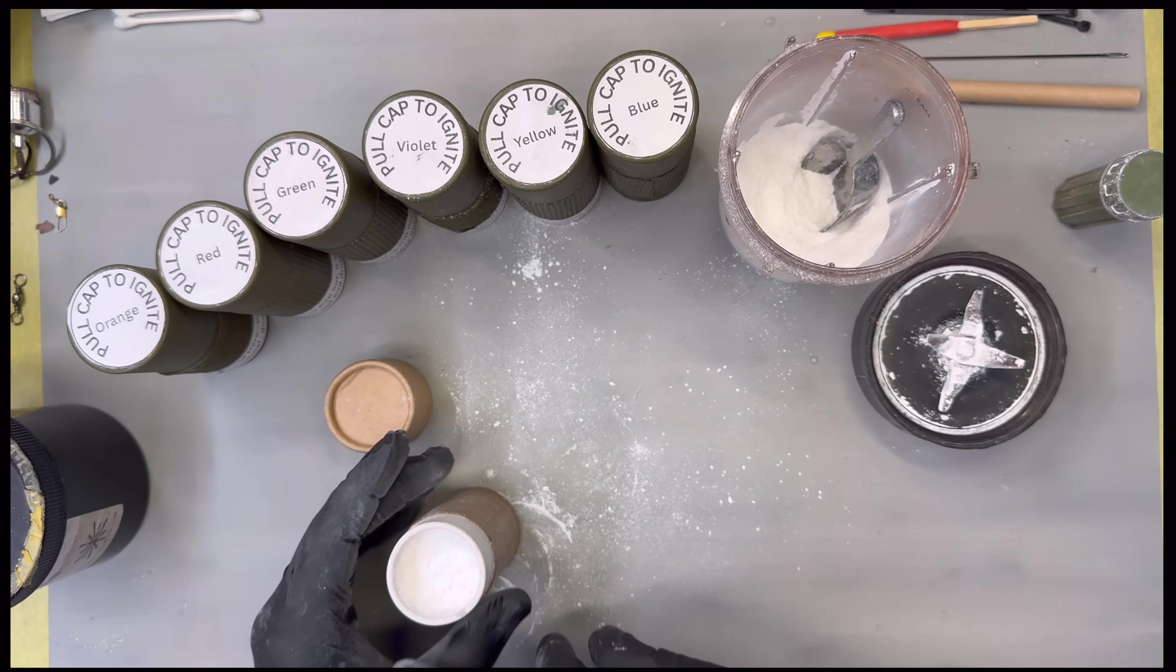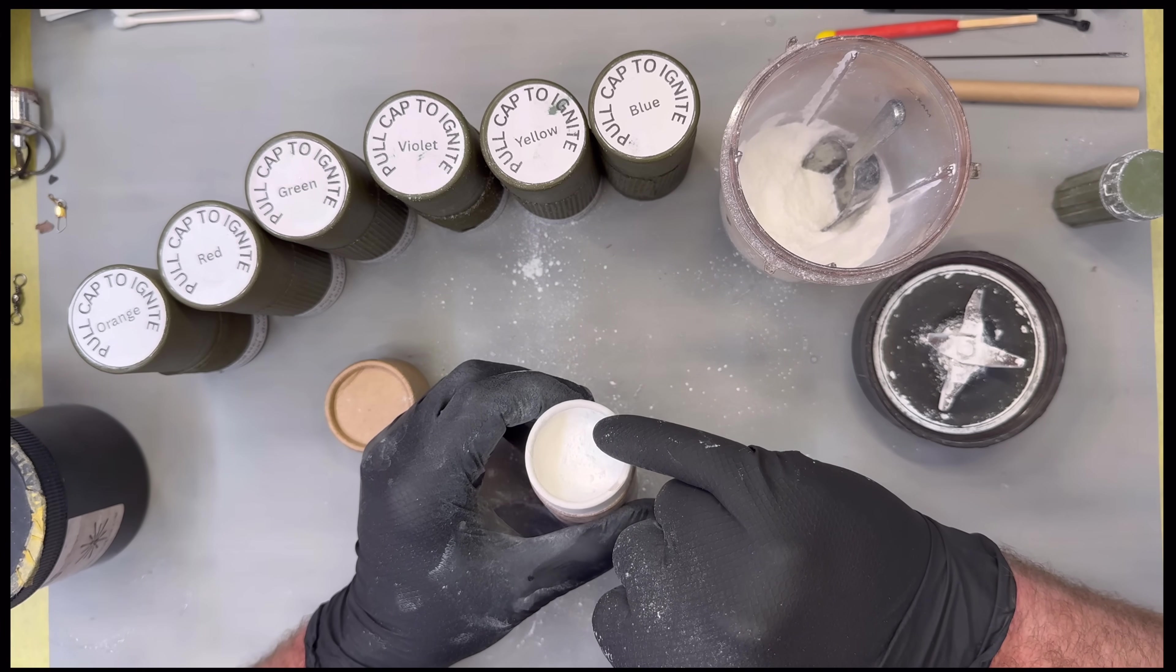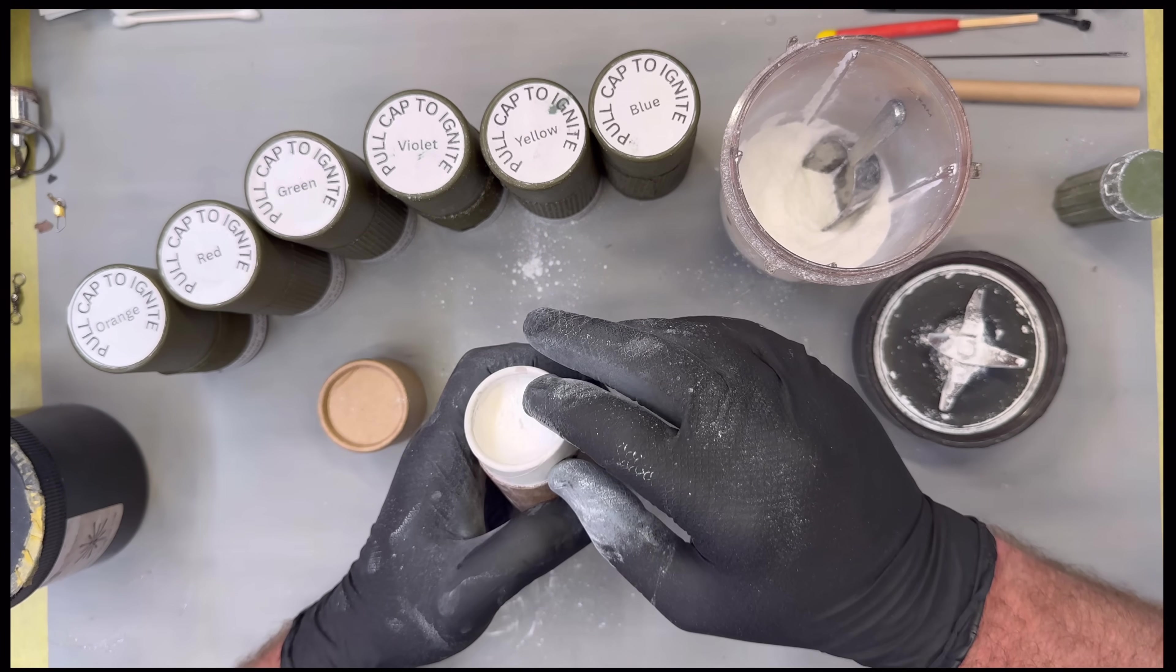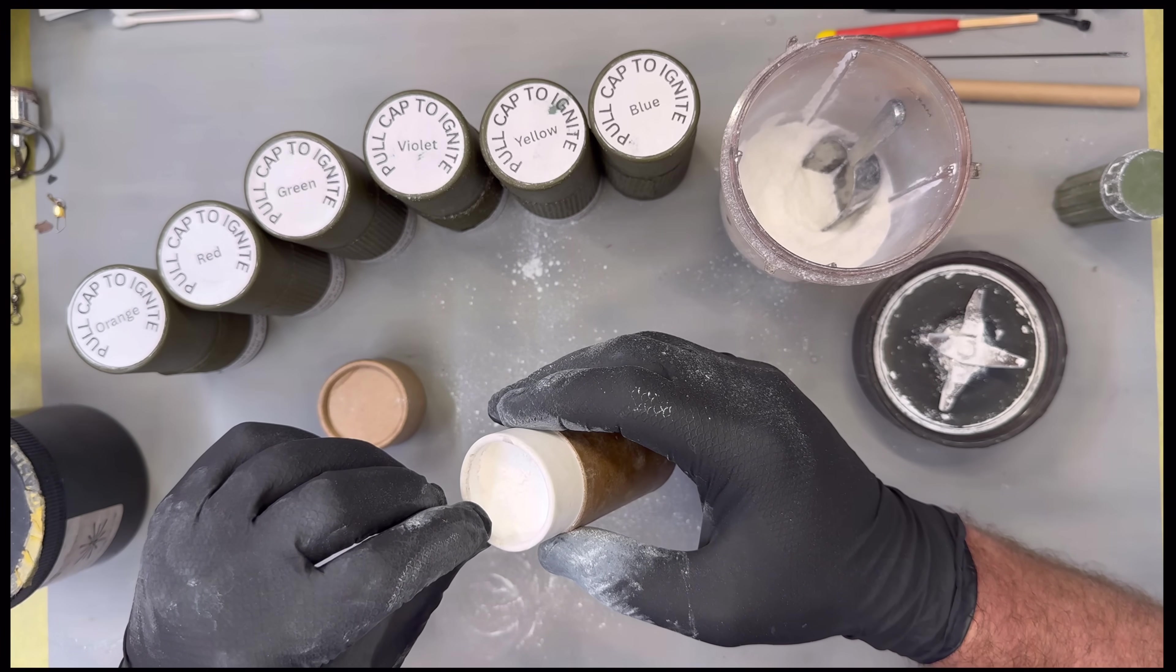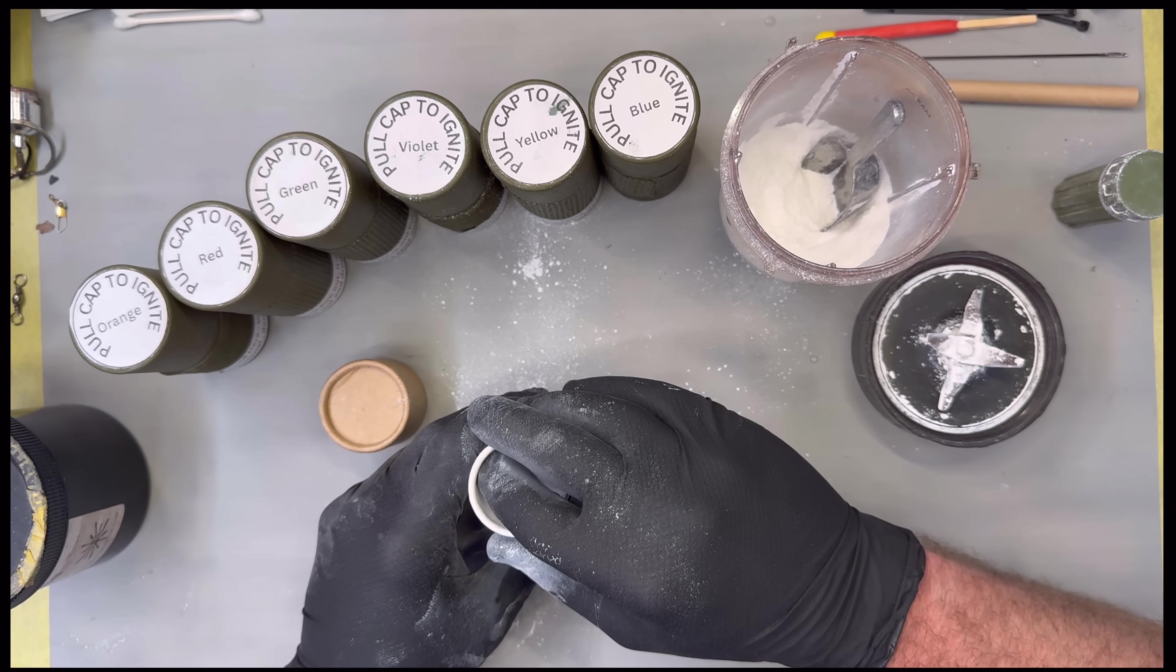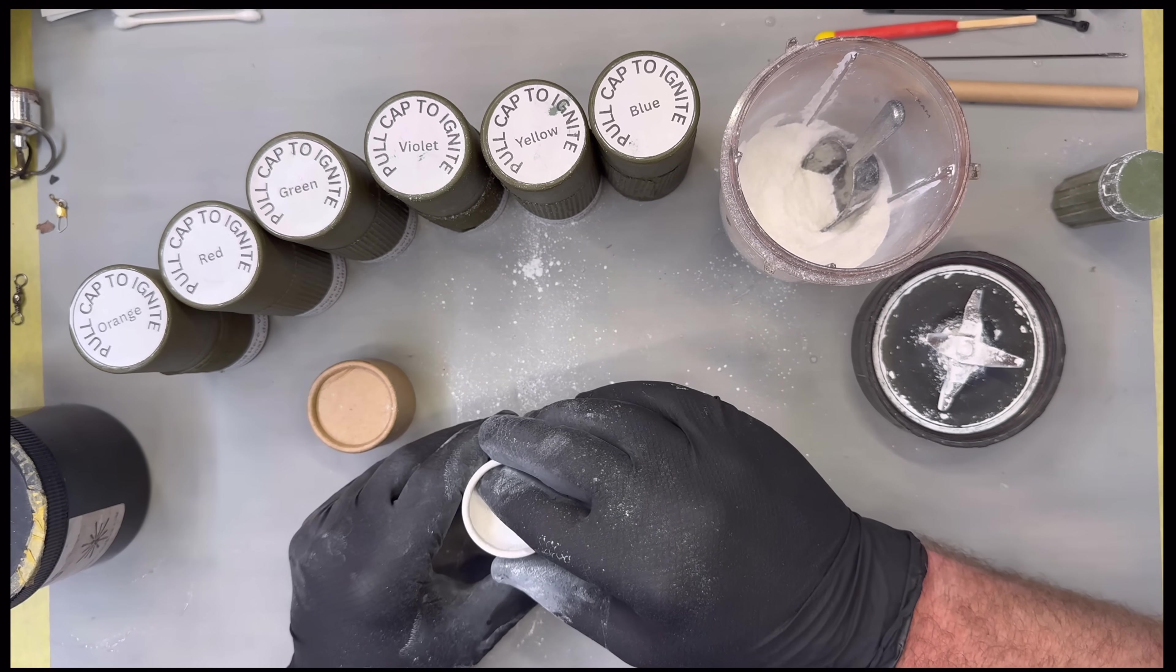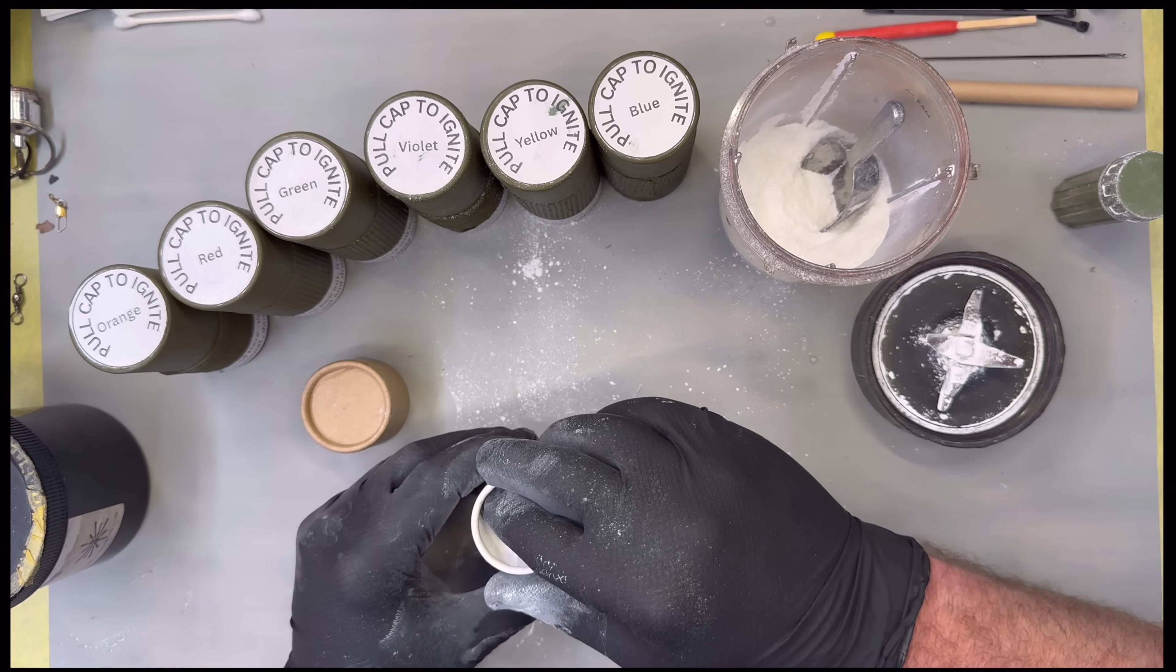We want to leave approximately five-eighths of an inch or so to a half an inch underneath this lip, and we're just going to pour on another layer of epoxy.